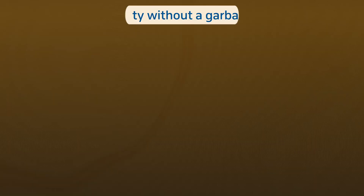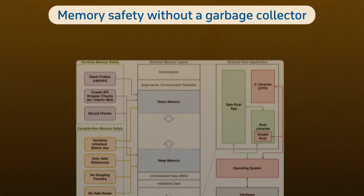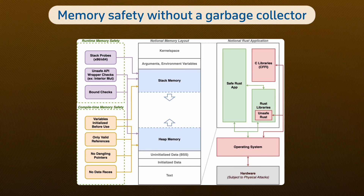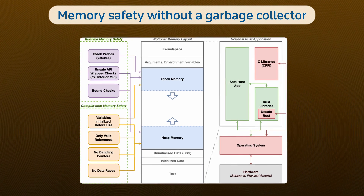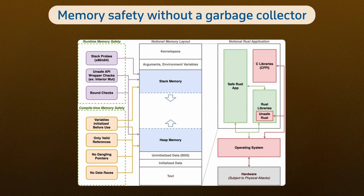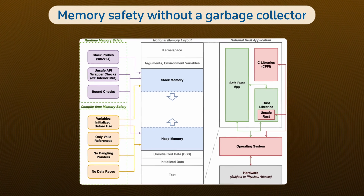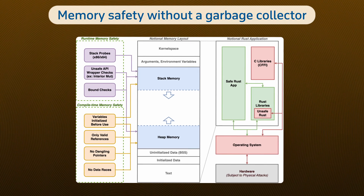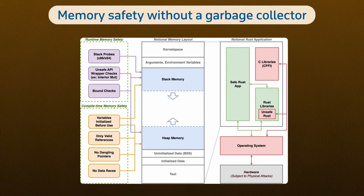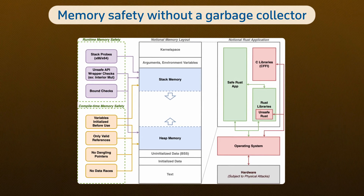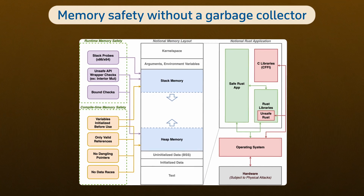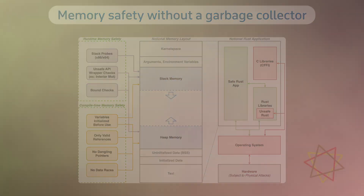Reason number one: memory safety without a garbage collector. Languages like Python and Java rely on garbage collectors to manage memory for you, which is convenient, but also adds overhead. Rust, on the other hand, lets you write memory-safe code without a garbage collector, giving you the control and performance of C++ with far less risk.